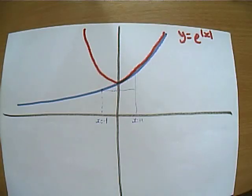The graph of y equals e to the power of mod x. And that, ladies and gents, is how we can practice our graph transformations on graphs from the exponential function and the natural logarithm function.